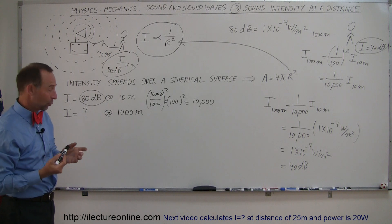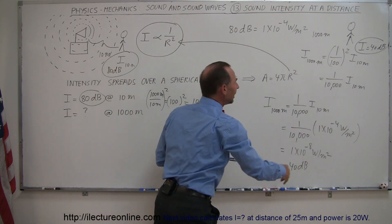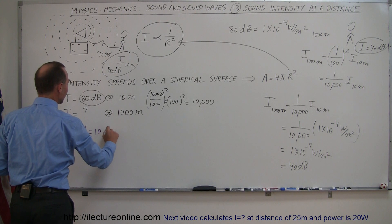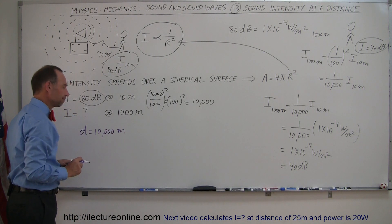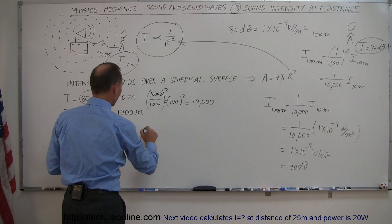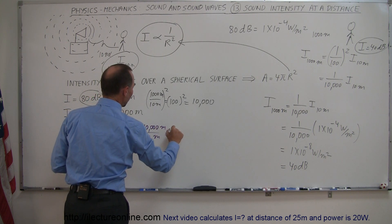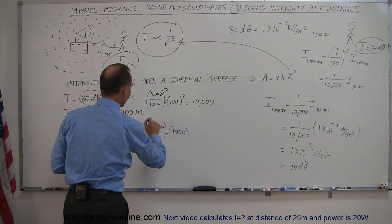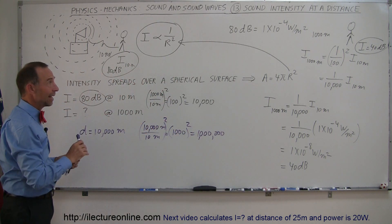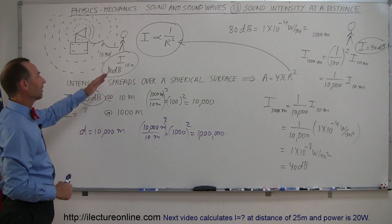As a quick example — what if another person stands even farther away, at a distance of 10,000 meters? What would the sound intensity be there? We get the ratio: 10,000 divided by 10 meters is a ratio of 1,000 to one. If we square that ratio we get 1,000,000, which means the intensity at 10,000 meters would be one-millionth of the intensity at 10 meters.